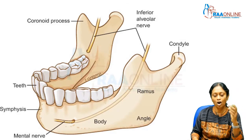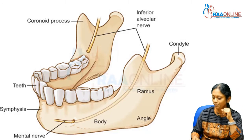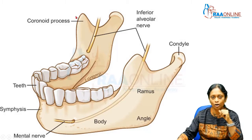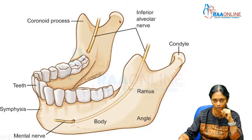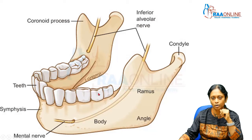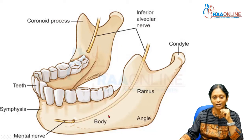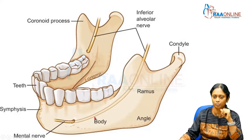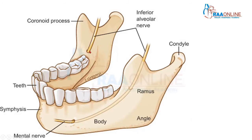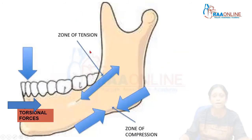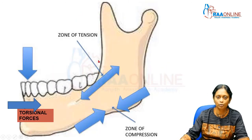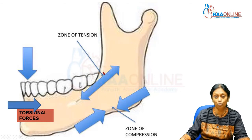The mandible is a horseshoe-shaped structure. We have the coronoid process, the condylar process, and the dental alveolar process. That's the ramus, the angle, and the body. You have your mental foramen through which the mental nerve comes out, starting from the inferior alveolar nerve at the mandibular foramen. When looking at these fractures, we're looking at where and how they occur and what forces are acting on them.